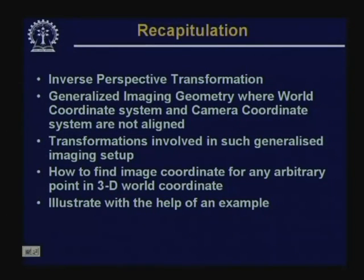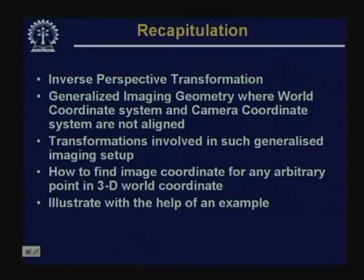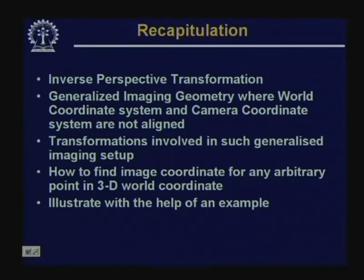What we have seen in the last class is: once we have image points in an image plane, how to apply the inverse perspective transformation to get the equation of the ray (state line) so that points on that ray map to a particular image point on the imaging plane. We have also seen a generalized imaging geometry where the world and camera coordinate systems are not aligned, discussed the set of transformations involved, and illustrated with an example.